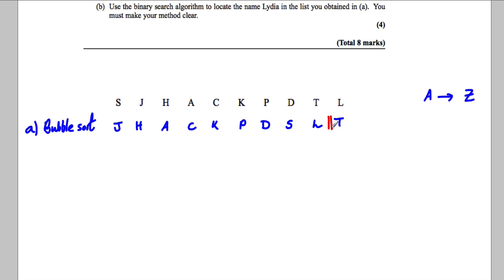So we're going to do another bubble sort now. What's first out of H and J? H is before J, so I'm going to put H there. Between J and A? Well A is first. Between J and C? Well C is first. Between J and K? J is first.